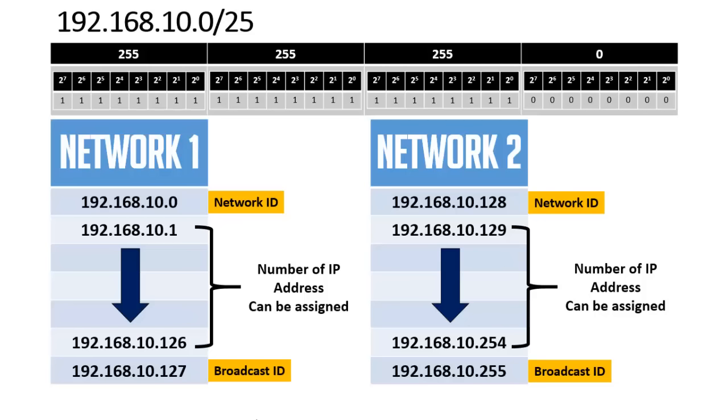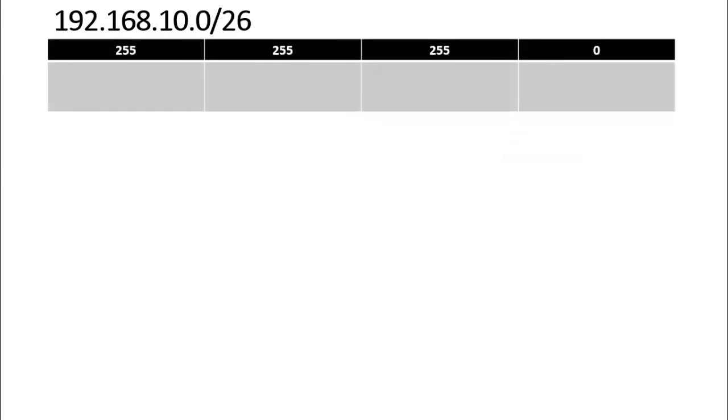Hope the concept is clear. Let's take another example: the IP address 192.168.10.0 with the CIDR value /26. The IP address is the same as before but this time we are using CIDR value 26. It is a Class C IP address and by default its subnet mask is 255.255.255.0.